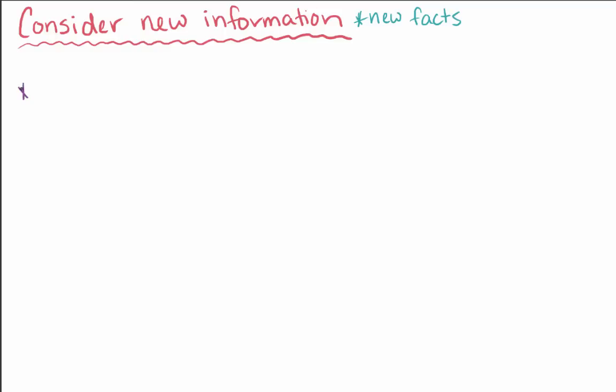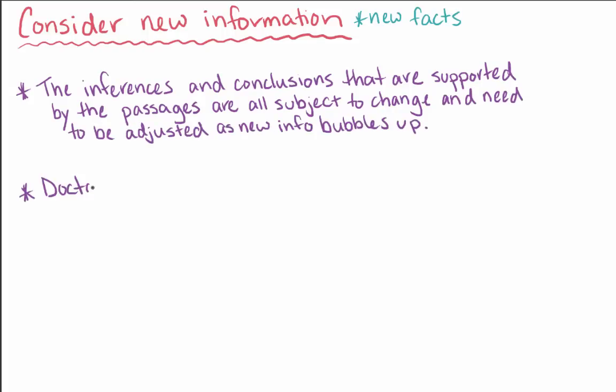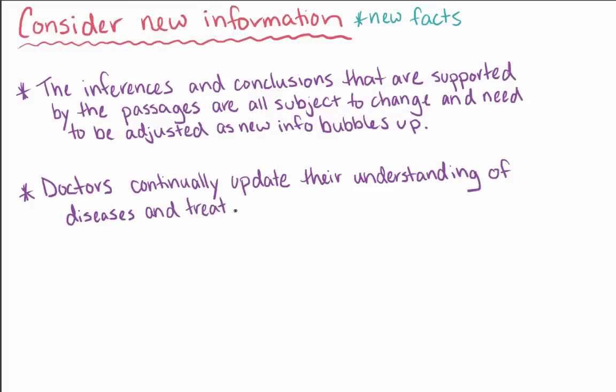The basic concept that the MCAT wants students to understand is that the inferences and conclusions that are supported by the passages are all subject to change, and need to be adjusted as new information bubbles up. This is an important skill because doctors need to continually update their understanding of diseases and treatments as they get new information. To better understand these types of questions, be sure to try some practice items and check out the other videos in this section.